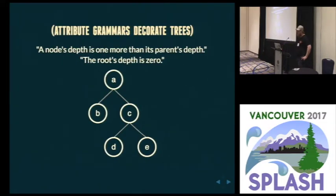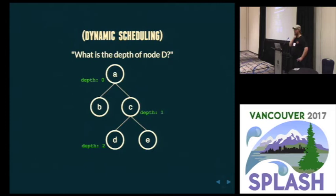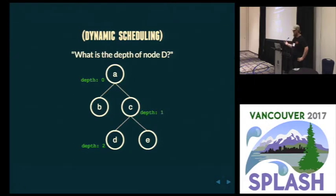For the uninitiated, an attribute grammar is a small program for operating on a tree. You're given a tree with some data on it and you're trying to get some more data. A super simple example is if we want to calculate the depth of all nodes. An attribute formula for calculating the depth of any node says that the depth is one more than my parent's, and the root's depth is zero. A dynamically scheduled attribute grammar, as opposed to a statically scheduled one, doesn't calculate all attributes on all nodes from the beginning — we only start evaluating things once a query is made. So if we wanted to know the depth of node D, we'd follow the formula and say that's one more than the depth of C, which is one more than the depth of A, which is zero.